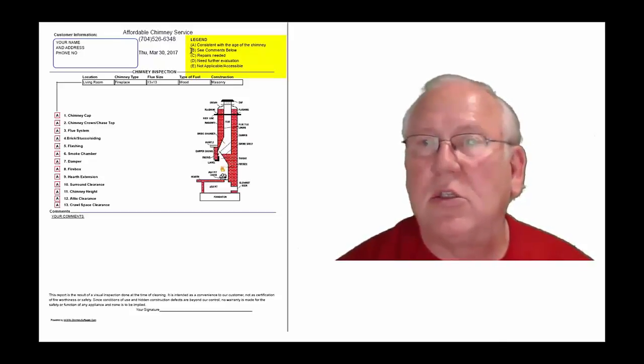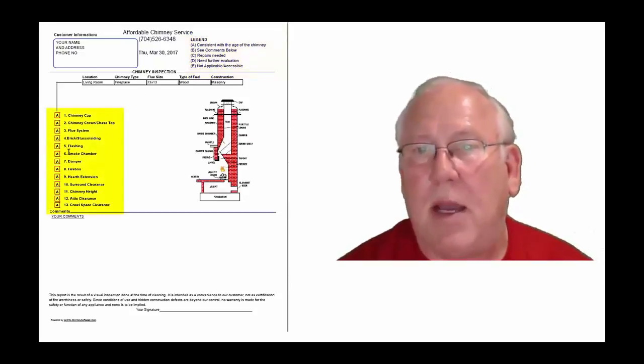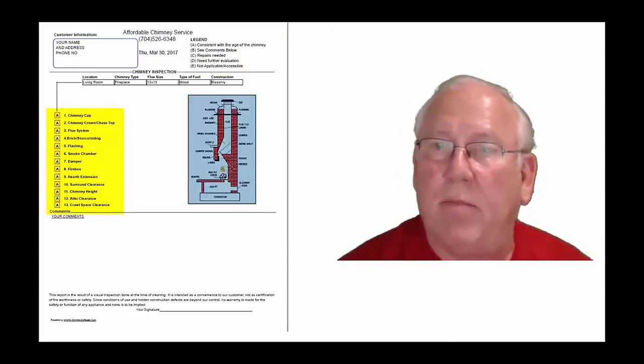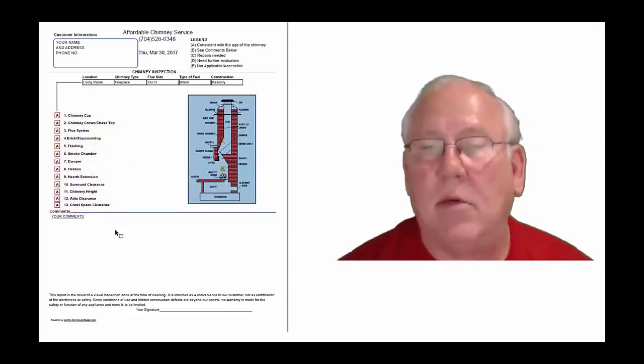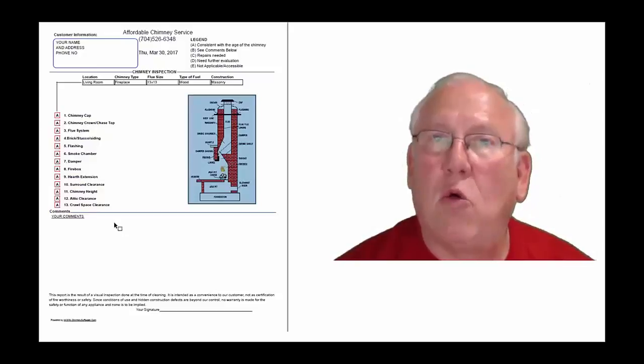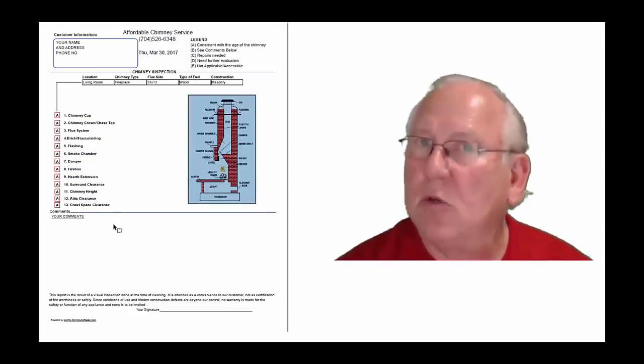Each one of these initials pertains to something. A is consistent with the age of the chimney. B, see comments below. C, repairs needed. D, need further evaluation, or E, not applicable. They're placed into the boxes next to the parts of the chimney that can be easily identified in this diagram. Then, of course, you'll find my comments here below. Now let's take a look at your particular, your personal report. So stay with me.